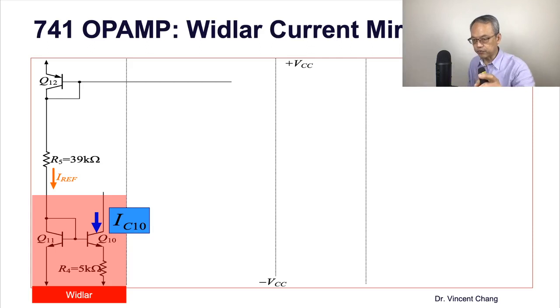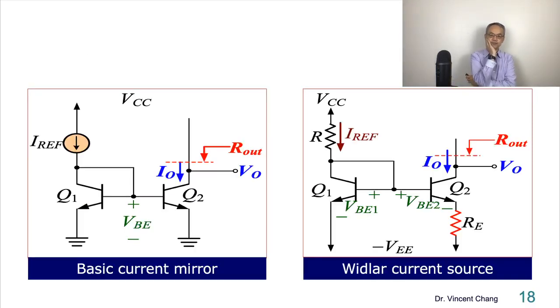And then the R4 is 5 kilo ohm. Try to solve the IC10 by yourself. I hope you can do this homework. Try this by yourself.